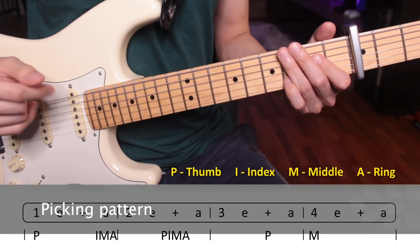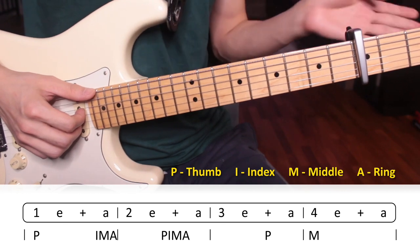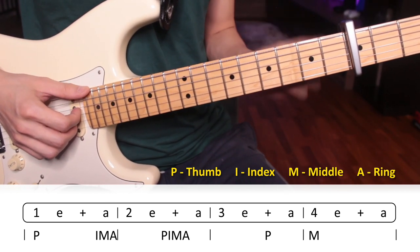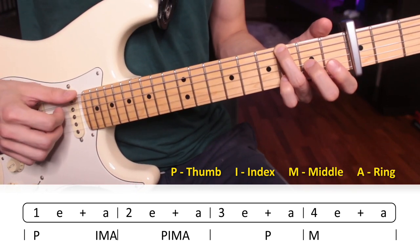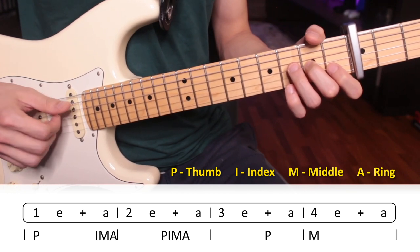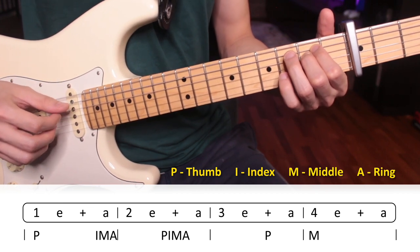Alright, now let's check out the right hand picking pattern. The pattern is going to be the same all the way throughout the song except for the C major chord. So once again, the chord progression goes G, then D, and then E minor 7, and then a C major.